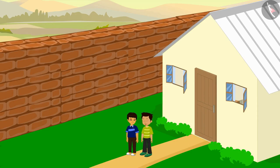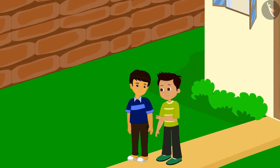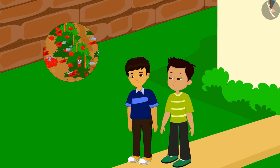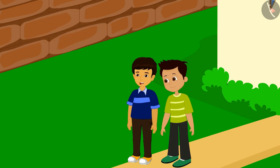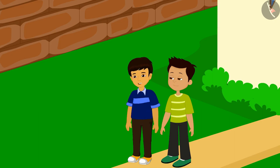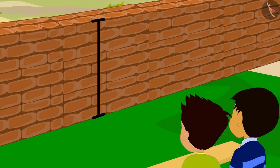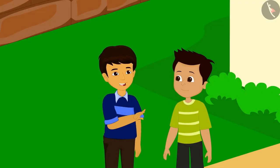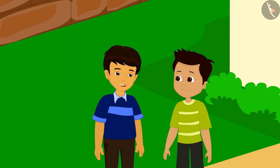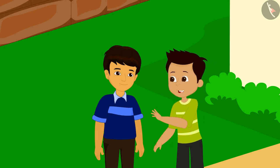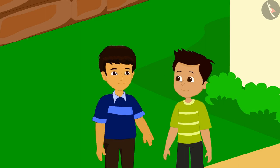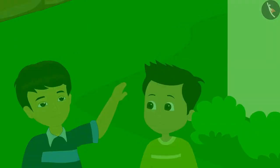Manas, why is this wall built on the right side of your house? Rats from the neighboring farm have been terrorizing us since a few days, so my dad built this wall between our house and the farm. This wall is very high — how many bricks would have been used to construct it? Let's figure this out through mathematics!